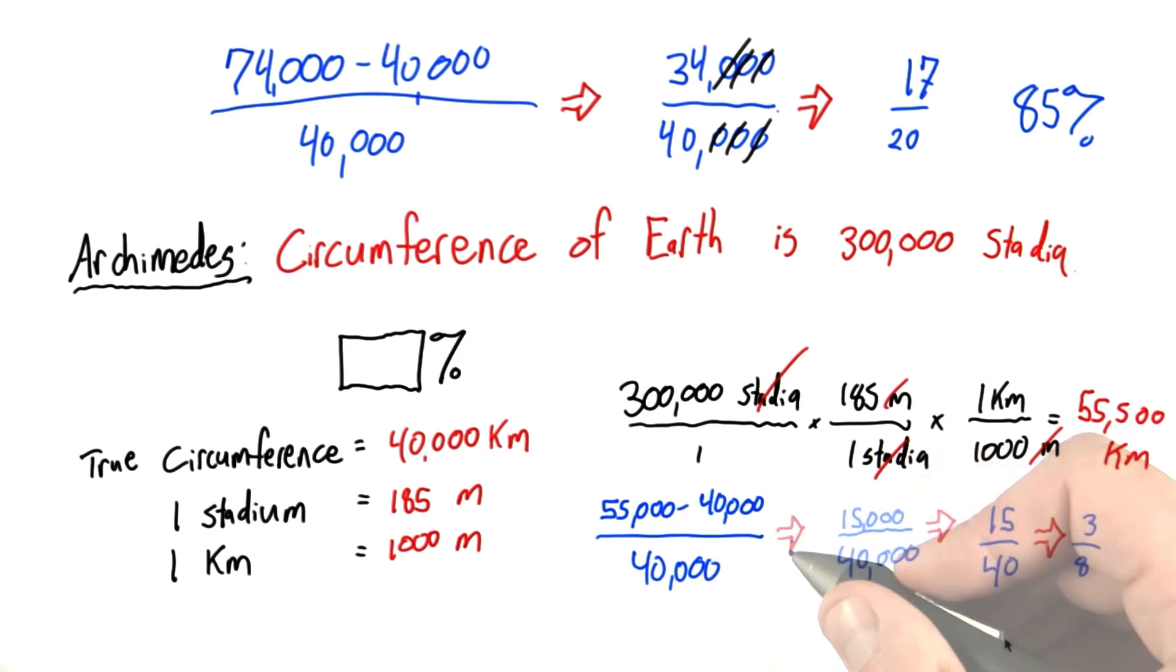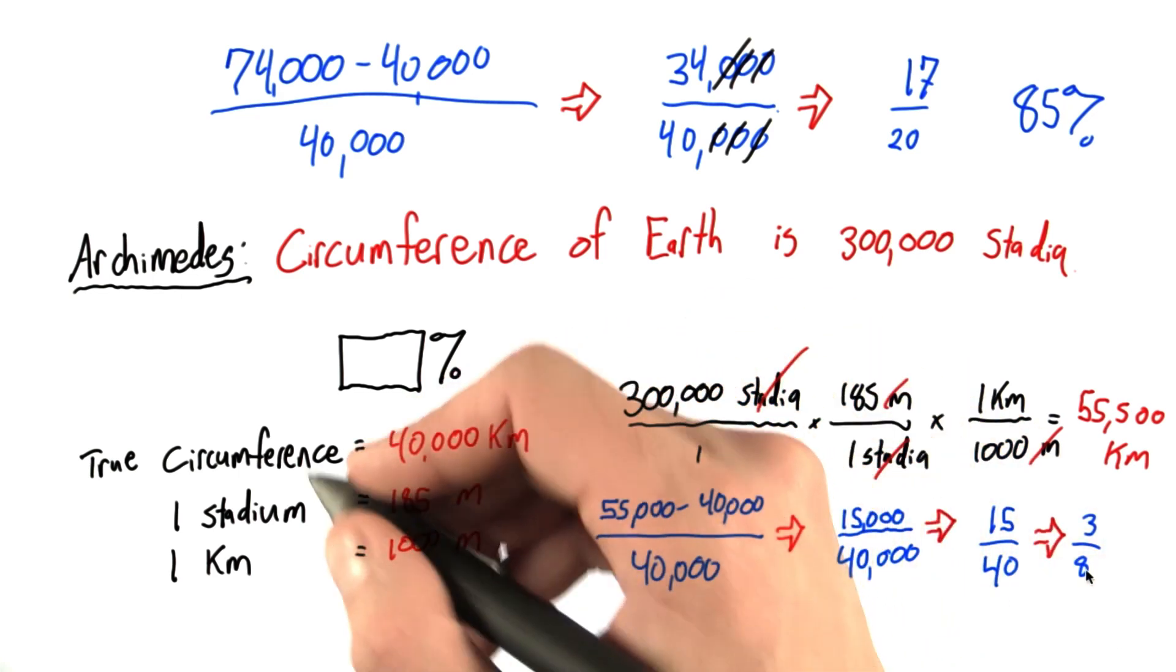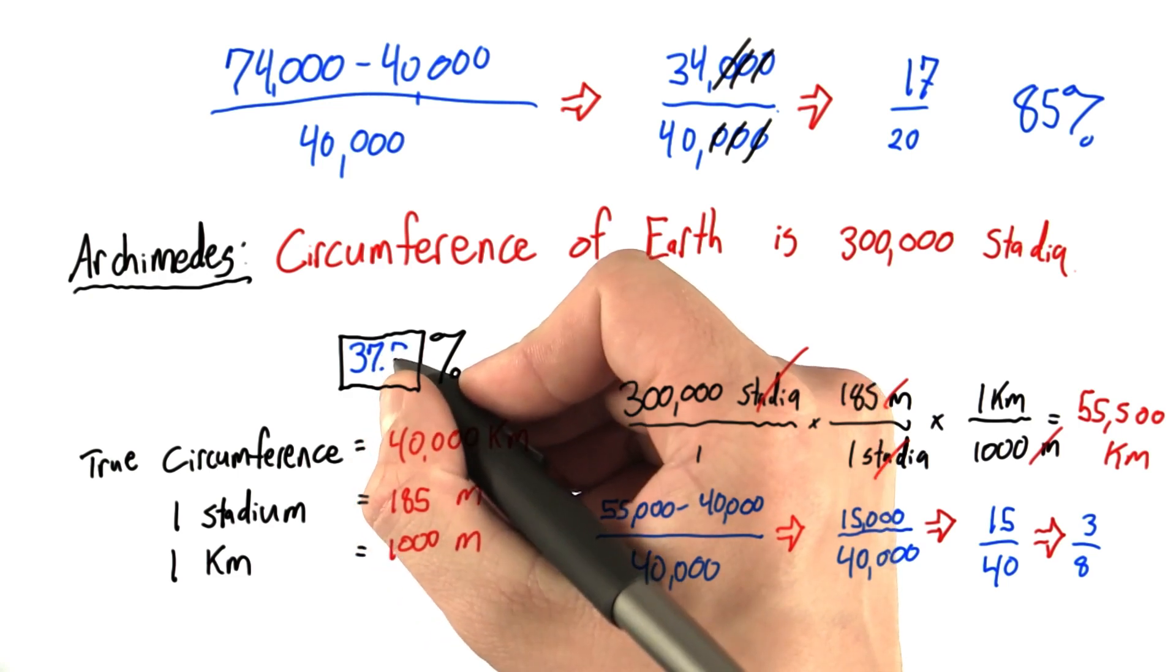When we do this, we get 15,000 over 40,000, which is 15 over 40, which is 3 over 8, which is 37.5%.